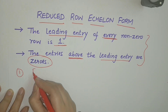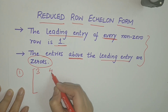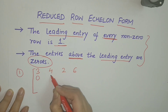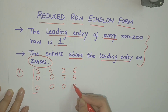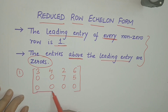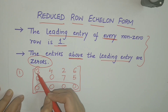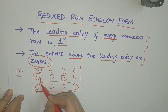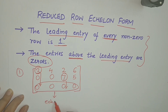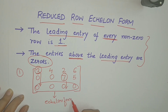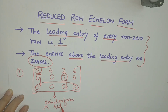Consider the matrix [[3,4,2,6],[0,0,7,5],[0,0,0,0]]. This matrix has a row of all zeros at the bottom. The leading entries are 3 and 7; the entries below the leading entries are 0, and each leading entry is to the right of the leading entry of the previous row. So this matrix is in echelon form. However, the leading entries are not 1, so this is not in reduced row echelon form.